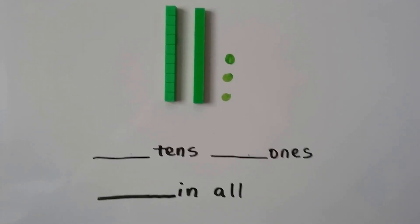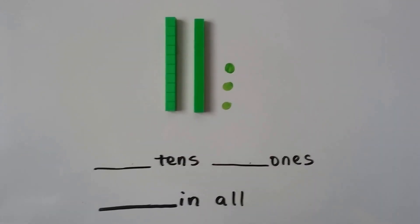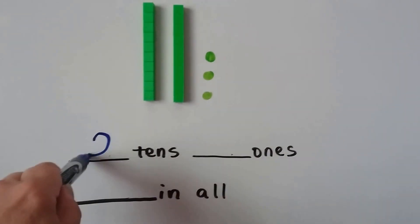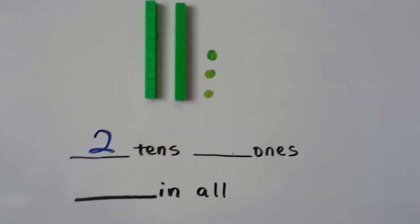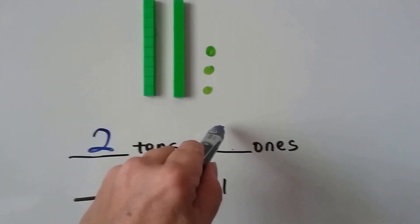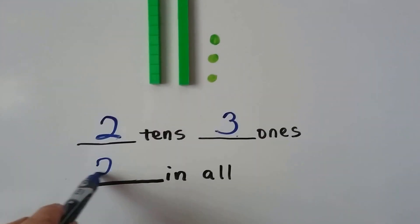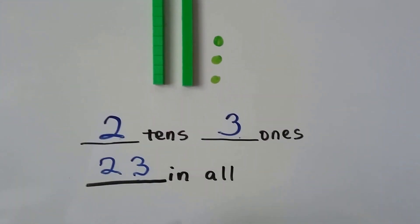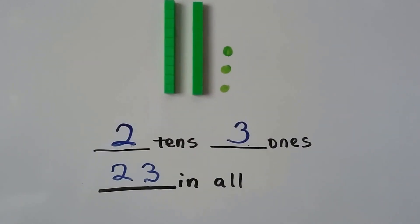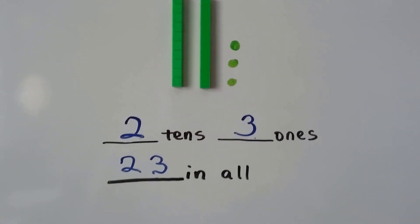How many tens do we see here? I see one, two tens. How many ones do we see? One, two, three ones. We have two tens and three ones. We have 23 in all. Twenty-three is a two-digit number.